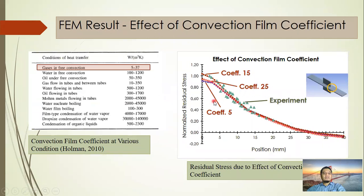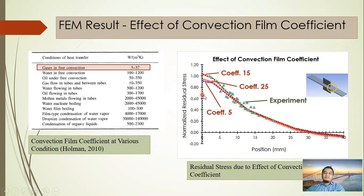We then determine which convection film coefficient produces the best-fit curve. In gas convection, the range is 5 to 37 W/m²K. We simulate using convection film coefficients of 5, 15, and 25 W/m²K. We find that a convection film coefficient of 15 W/m²K gives the best-fit curve to the experimental data.